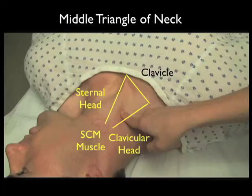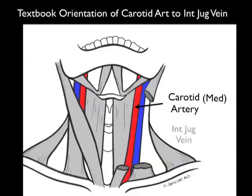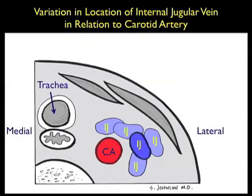Within the middle triangle of the neck run two very important vascular structures. As per the textbook orientation, the carotid artery should run medial to the internal jugular vein, which lies lateral to the artery. However, unfortunately there's great variability in human anatomy, and many times the internal jugular vein can overlap the carotid artery as shown in the drawing here.